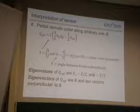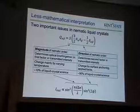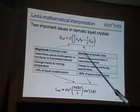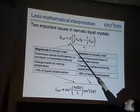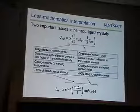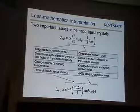I've been going over a lot of mathematics. Let me give you a less mathematical interpretation. When you look at the liquid crystal order characterized by this kind of tensor, you can see that it involves two sorts of factors: one factor is the magnitude of the nematic order, and another factor is the direction of the nematic order.